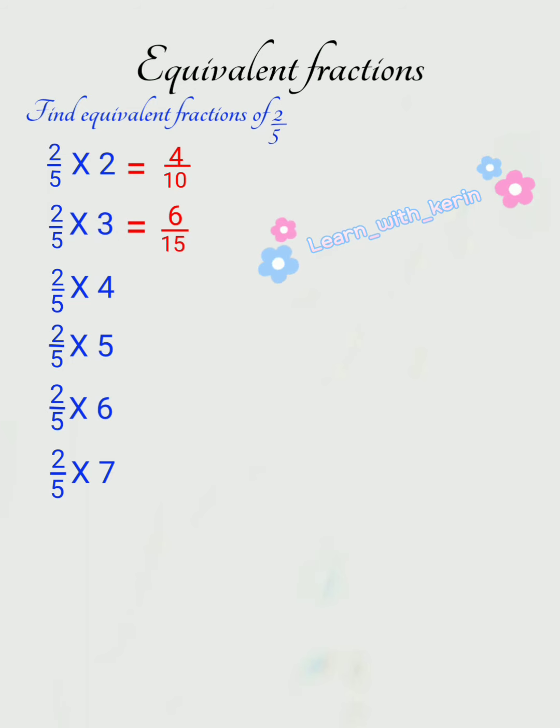Next, we will multiply 2 by 5 with 4. 2 4's are 8, 5 4's are 20. So, our third equivalent fraction is 8 by 20.